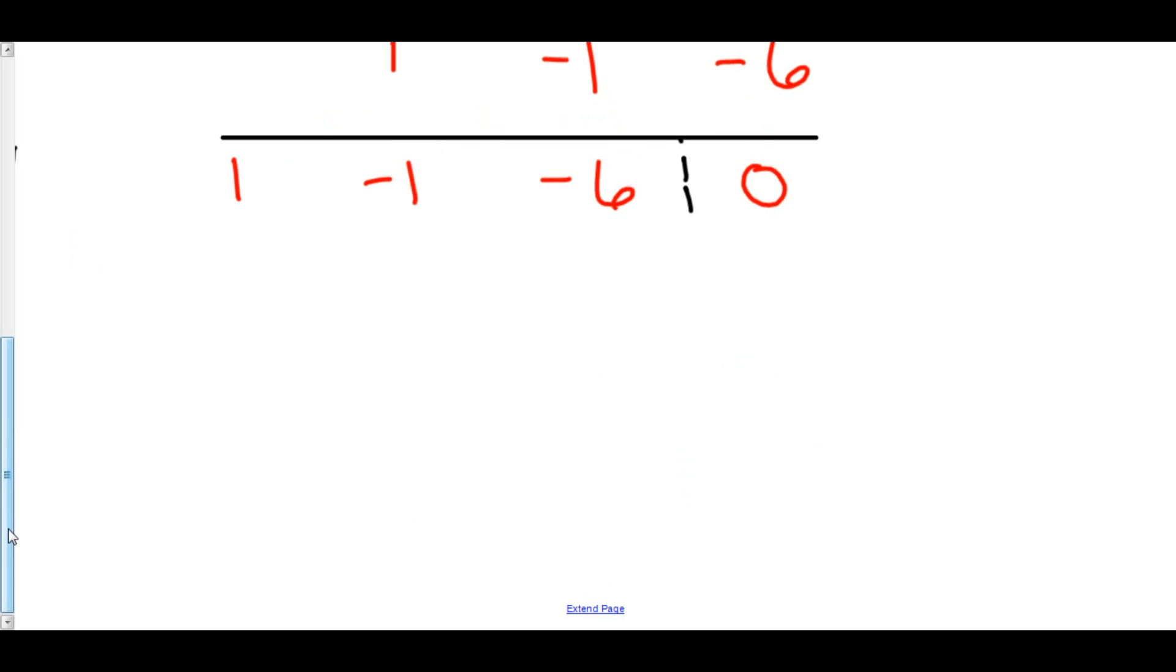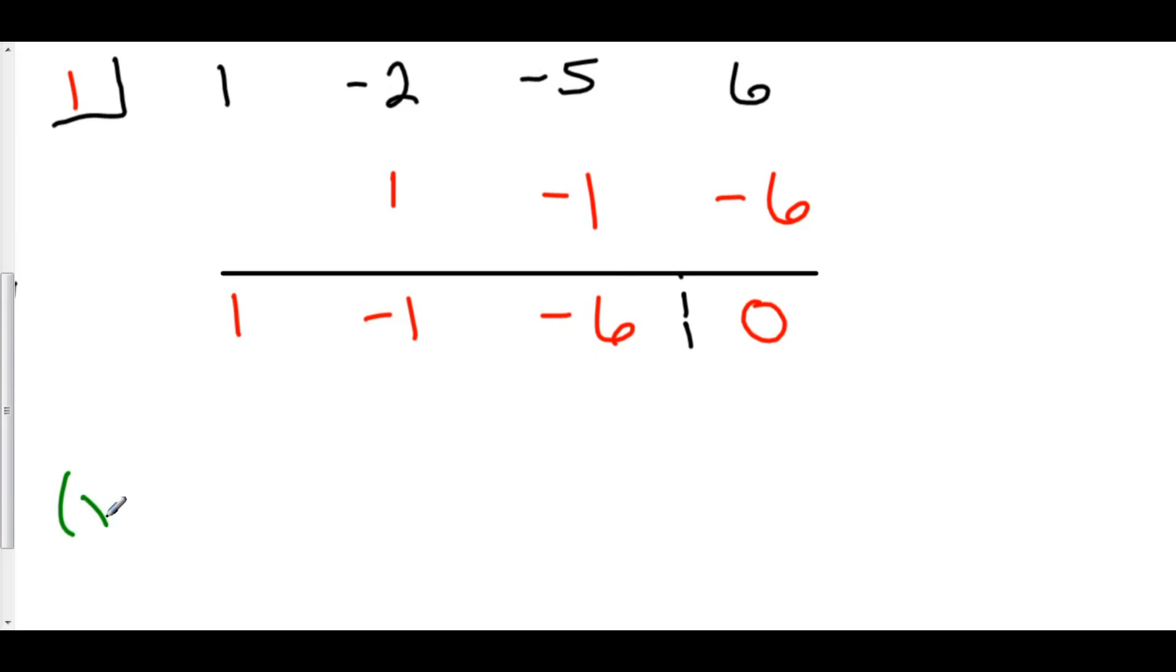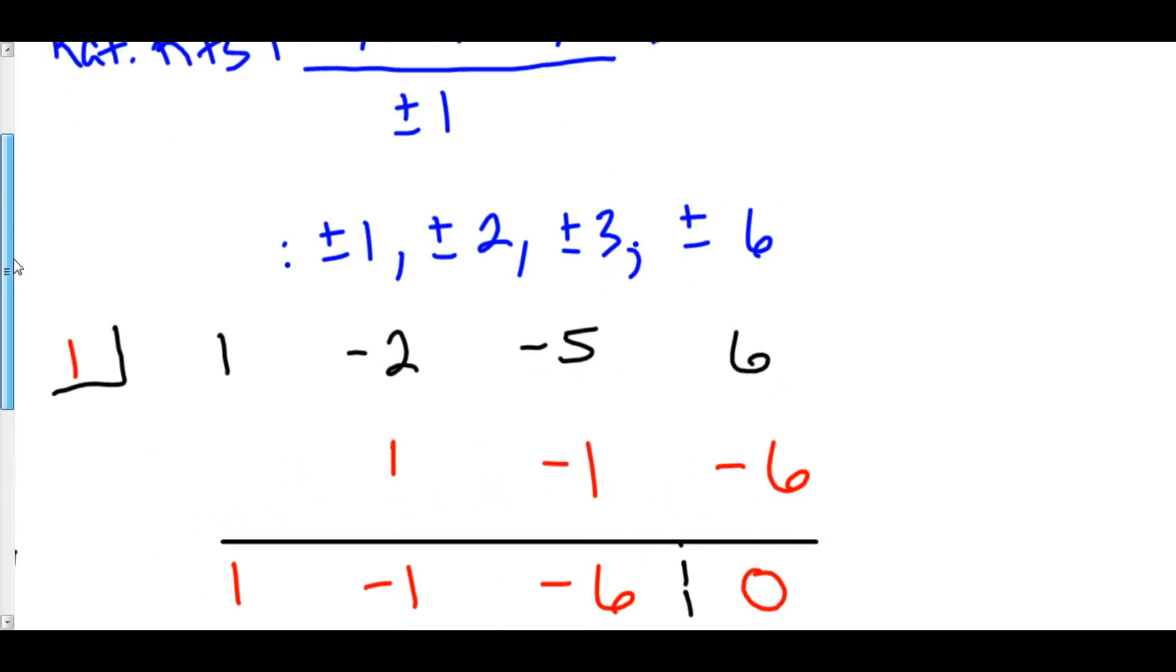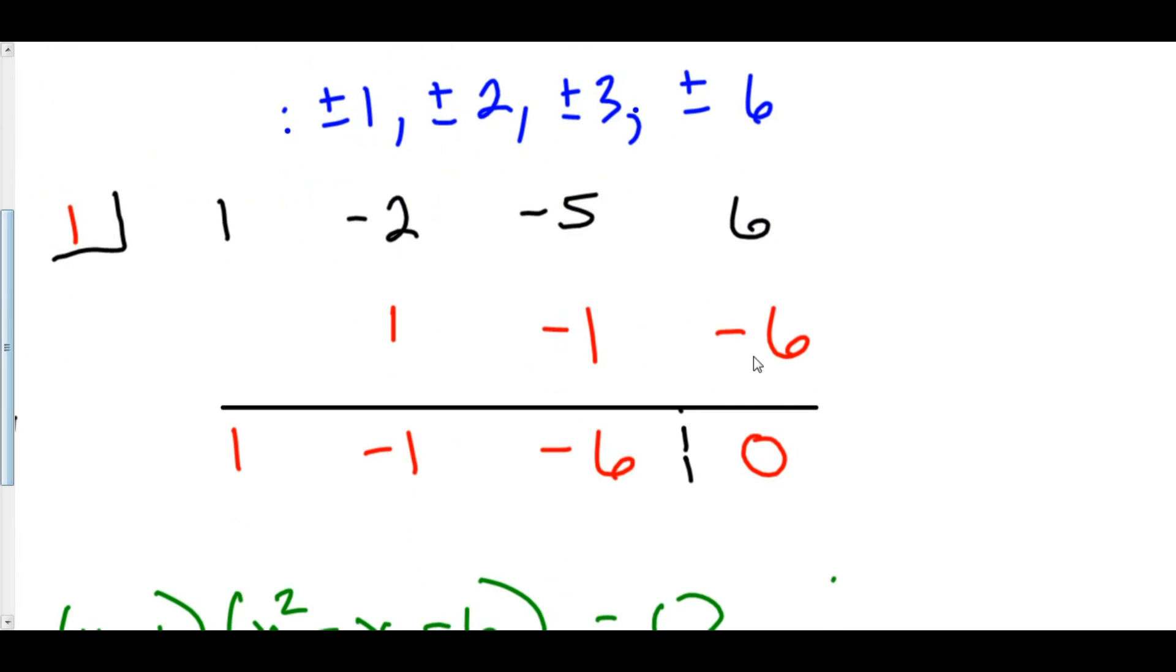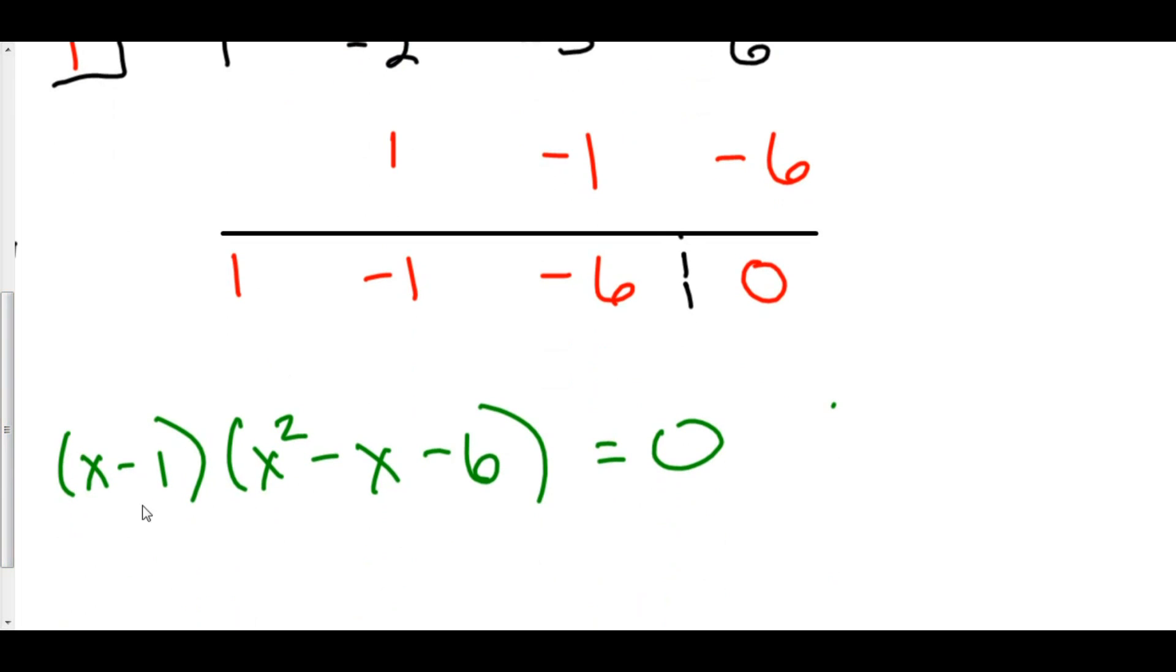But more than that, we just did synthetic division, which means we actually just divided our polynomial by x - 1, and it gave us x² - x - 6 = 0. So this is a lot of information that we got just from knowing that 1 is a root. We found 1 as a root by the rational roots theorem, but then because the remainder is 0 when we divided our polynomial by x - 1, that means x - 1 has to be a factor.